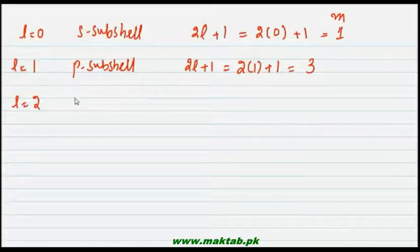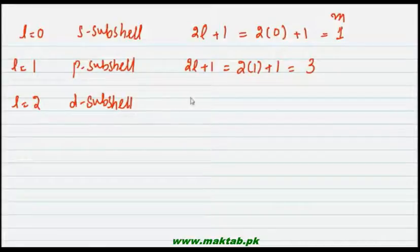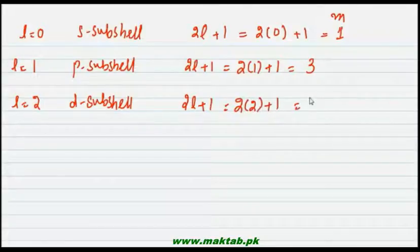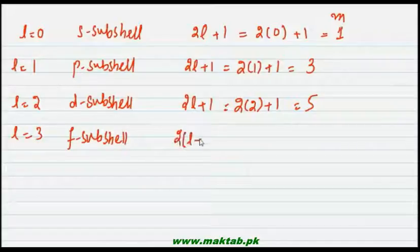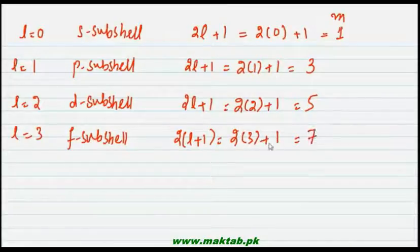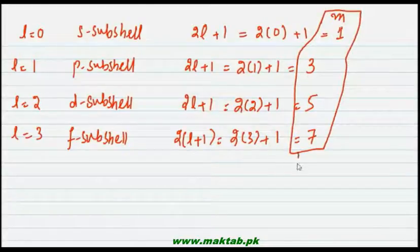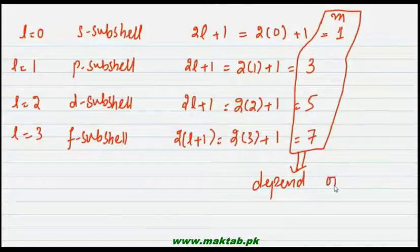When l is equal to 2, it is the d subshell. Using 2l + 1 gives 2 × 2 + 1 = 5, so m has 5 values. And when l is equal to 3, it is the f subshell. Using 2l + 1 gives 2 × 3 + 1 = 7, so m has 7 values.